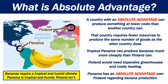An absolute advantage means a country can produce something at lower cost than another country can. That country requires fewer resources to produce the same number of goods. For example, tropical Panama can produce bananas much more cheaply than Finland can. Finland would need expensive greenhouses and costly heating. Panama has an absolute advantage over Finland regarding banana production.